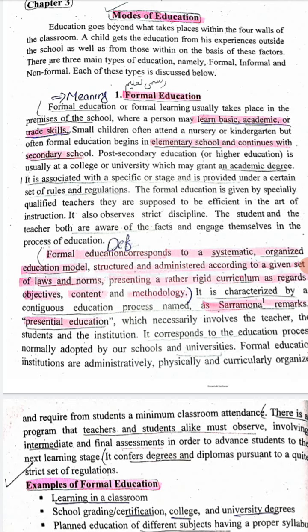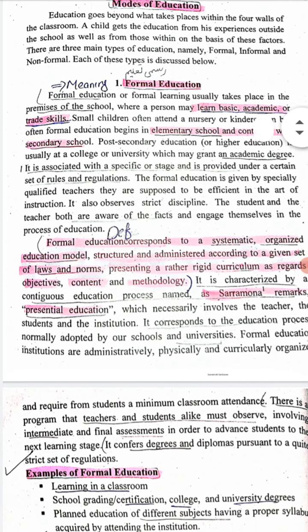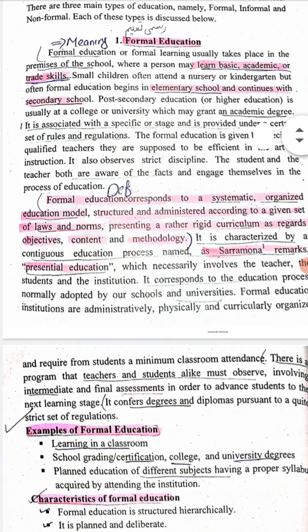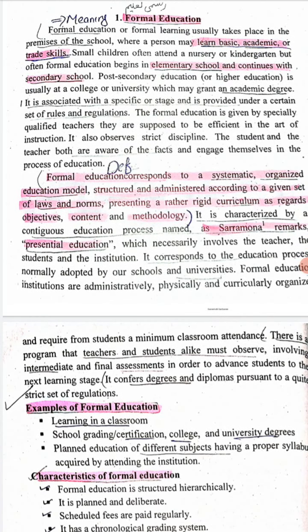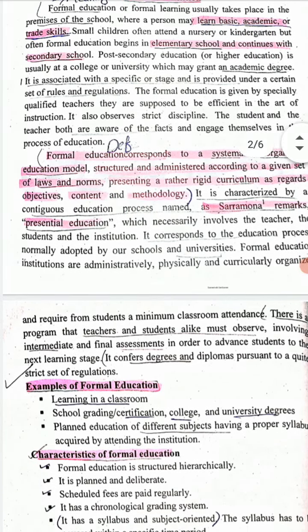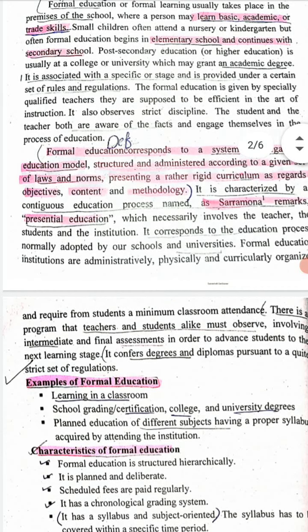Formal education corresponds to a systematic, organized education model, structured and administered according to a given set of laws and norms, presenting a rather rigid curriculum as regards objective, content, and methodology. It is a systematic, organized form of education.